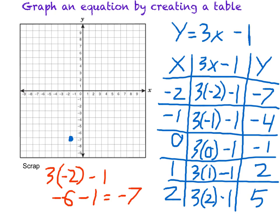Then I have negative 1, negative 4, which is here. 0, negative 1, right about there. 1, 2. And finally, 2, 5.